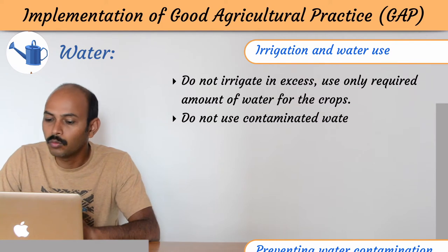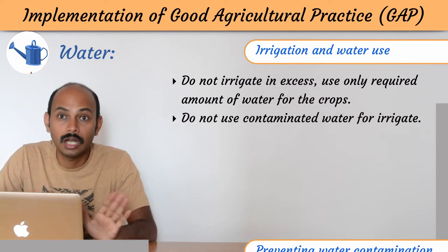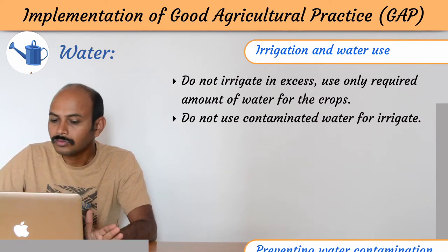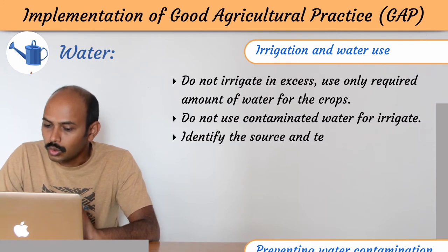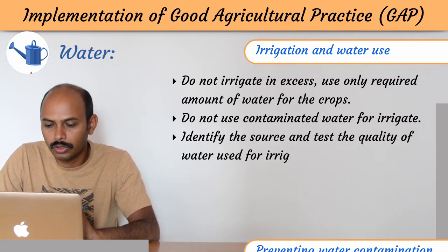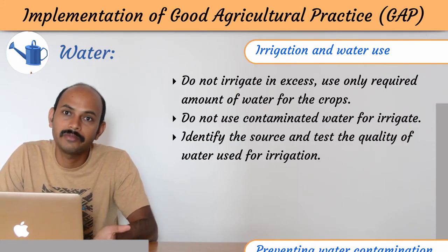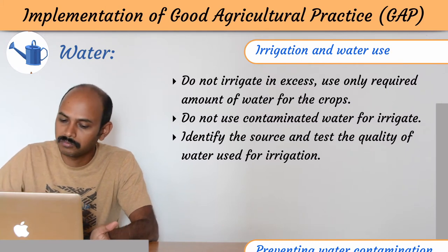Do not use contaminated water for irrigation. Identify the source and test the quality of the water used for irrigation — you should identify the source and check its quality.